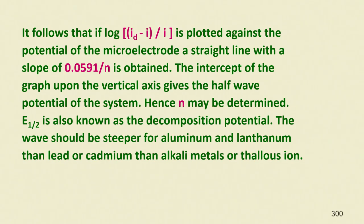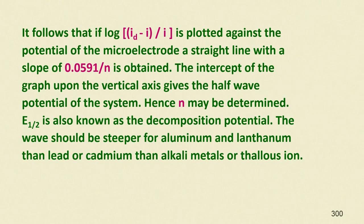If (id - i)/i is plotted against the potential of the microelectrode, a straight line with a slope of 0.0591/n is obtained, where n is the number of electrons involved in the reduction reaction. The intercept of the graph upon the vertical axis gives the half-wave potential of the system.